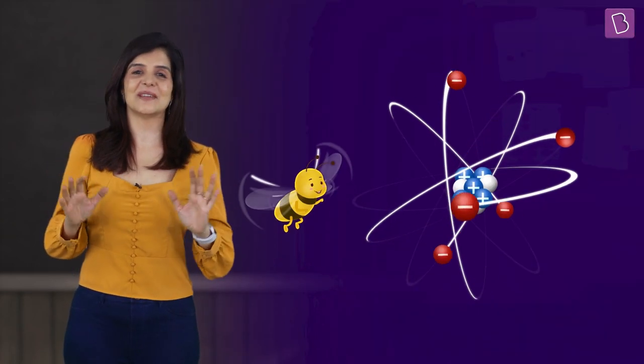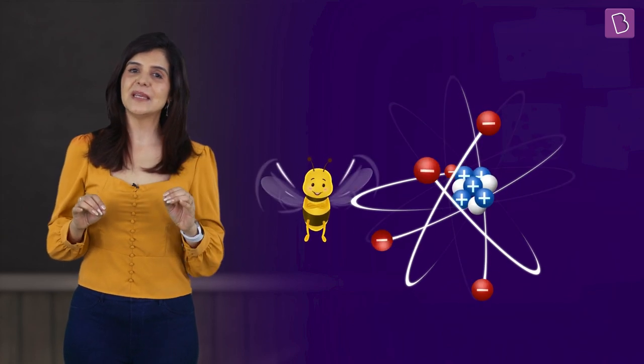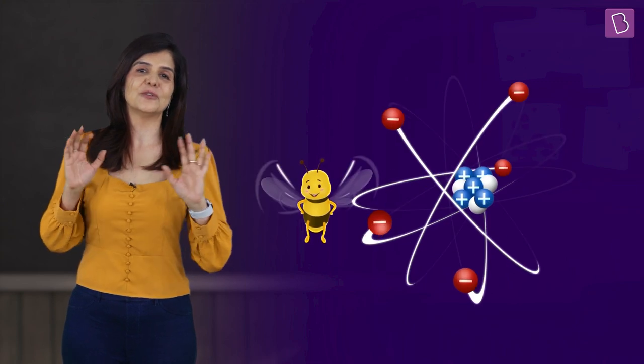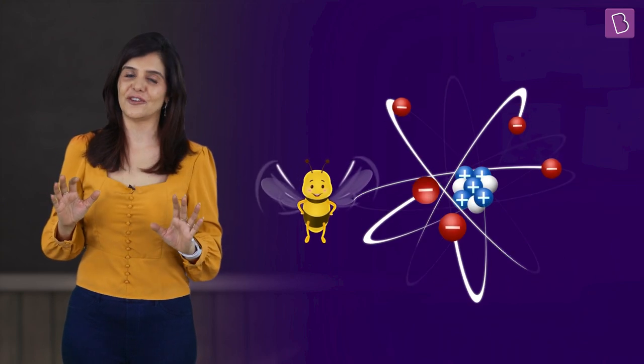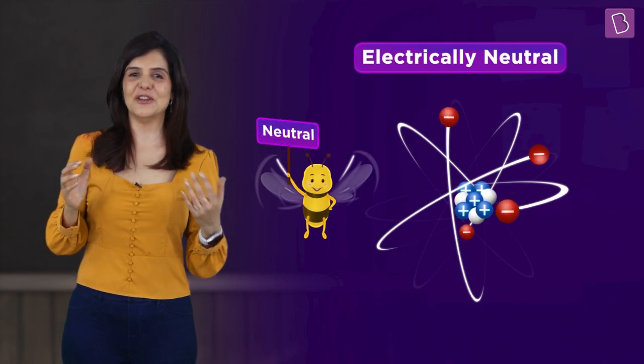So is everything around us, including our friend the bumblebee, electrified? Not quite. In general, all atoms have an equal amount of positive and negative charge, which adds up to zero. Therefore, in normal situations, a bumblebee also has no total or net charge on it. In simple words, it is electrically neutral.